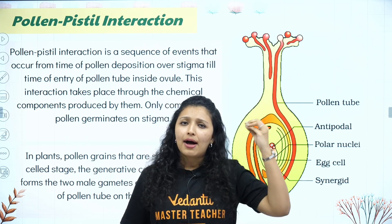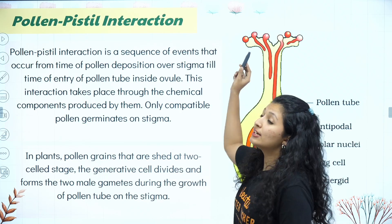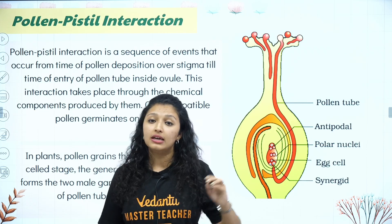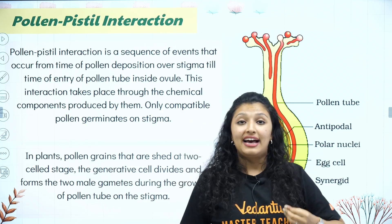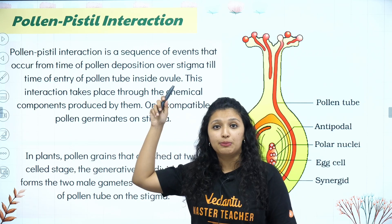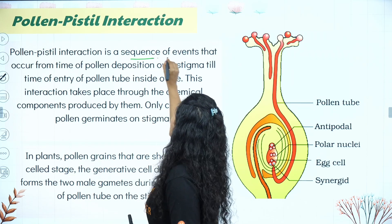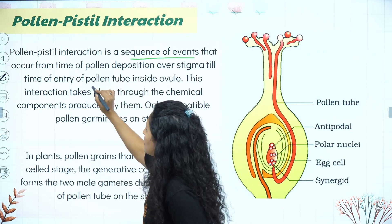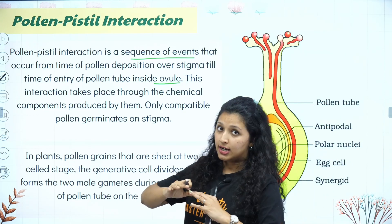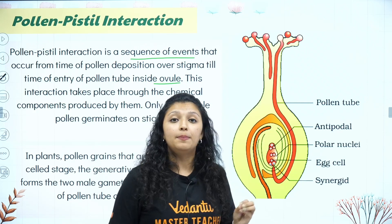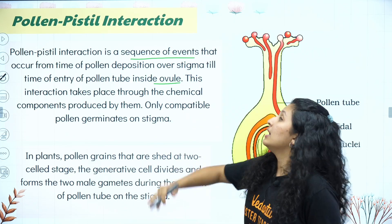Pollination: the mature pollen grain reaches the stigma — it can be by wind pollination or water pollination. The pollen grain has reached the stigma, which is the sticky surface. We call this pollen-pistil interaction. It is a sequence of events from the time of pollen deposition over the stigma till the time of entry of the pollen tube inside the ovule. All activities within this process are called pollen-pistil interaction. Only compatible pollen germinates on the stigma — they are going to be selected.